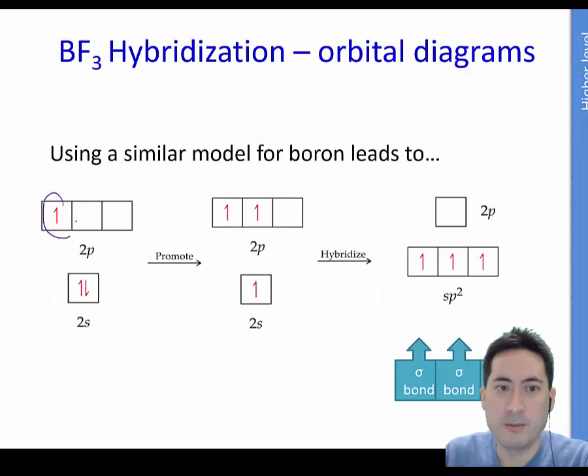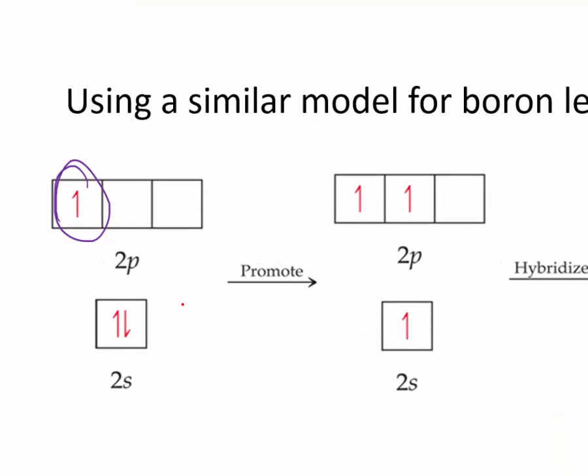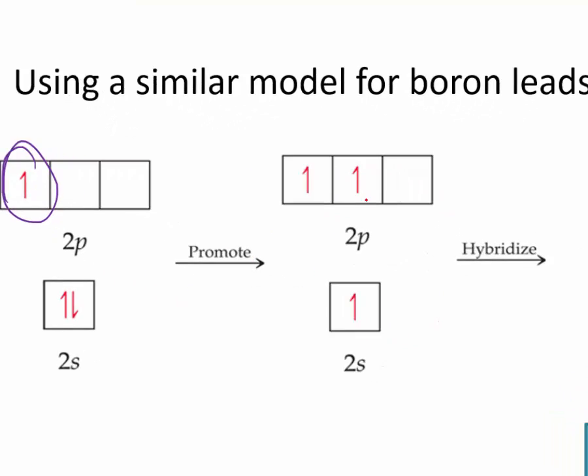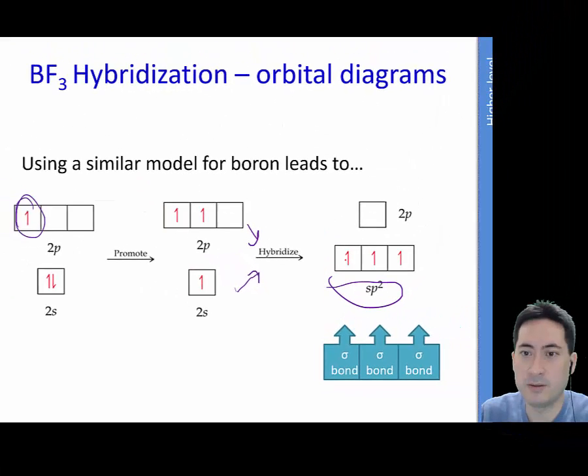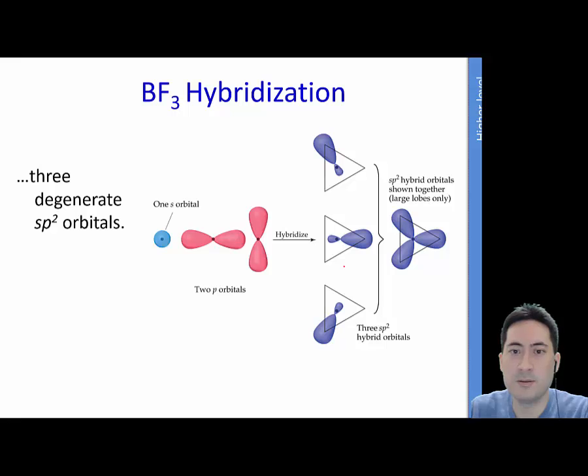BF3, a similar thing. There's only one electron there available for covalent bonding. So we need to do some promotion here. And then we need to convert the two to three sp2s. And that's what it will look like.